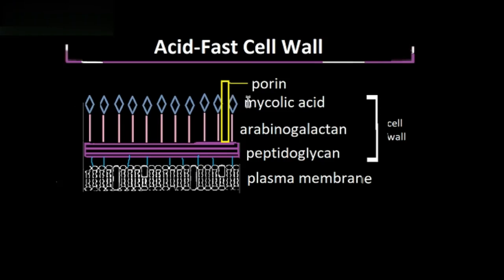This layer makes it so that the bacteria cannot take in the dyes involved in the gram staining process. And so for that reason, we cannot stain acid-fast bacteria with the gram stain. It's not just the gram stain — this layer makes the bacteria very resistant to other staining procedures as well, so a special staining procedure is needed.